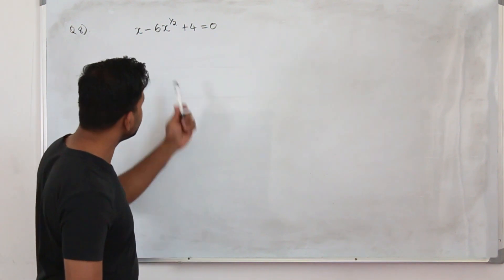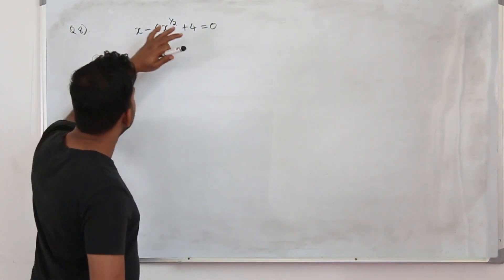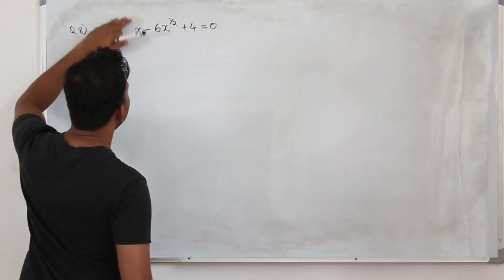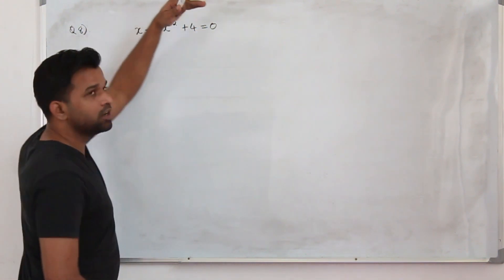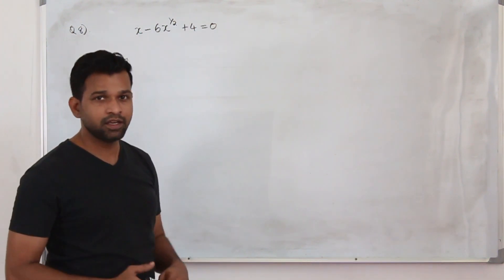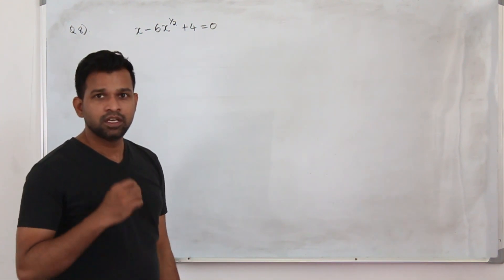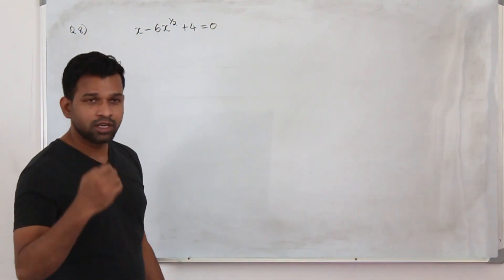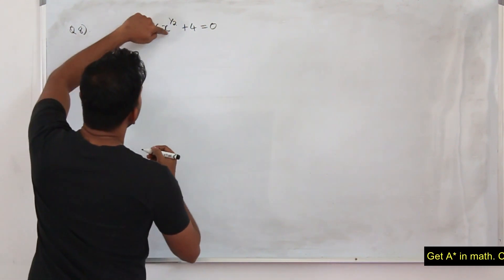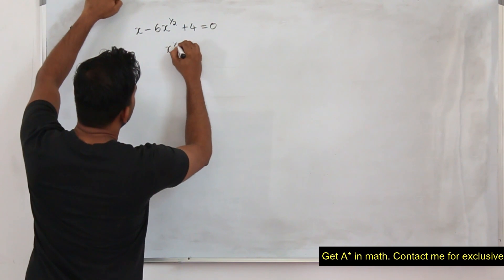This is from chapter two. Whenever you have this type of equation or any weird-looking equation they want you to solve, all we know is how to solve a quadratic equation. This is not a quadratic equation, so we are going to convert it into a quadratic equation. If you take x to the power half as y...